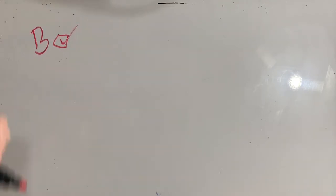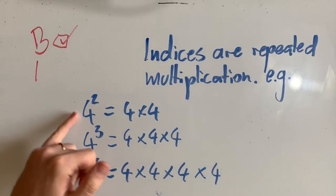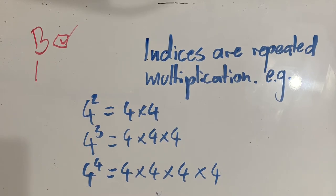So now we have done our brackets. So now we're up to indices. Indices are repeated multiplication. So 4 to the power of 2 is not 4 times 2. It's actually 4 times 4. The same way 4 to the power of 3 is not 4 times 3. It's 4 times 4 times 4. And 4 to the power of 4 is not 4 times 4. It's 4 times 4 times 4 times 4. And we do this as our next step.